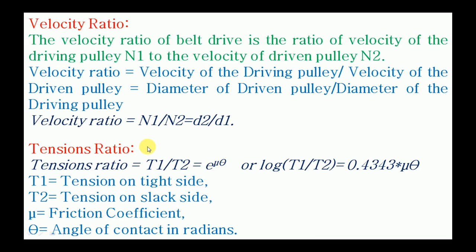The tension ratio: there are two sides of the belt — the tight side and the slack side. The tension on the tight side is T1 and on the slack side is T2. The ratio T1/T2 = e^(μθ), or in logarithmic form: log(T1/T2) = 0.4343·μθ, where μ is the coefficient of friction and θ is the angle of contact in radians.